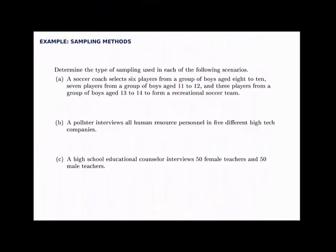In this example, we'll decide which type of sampling is being used in each description. In the first situation, a soccer coach selects six players from a group of boys aged 8 to 10, then seven players from the group aged 11 to 12, and finally three players from the group aged 13 to 14 to form a rec team. The key here is that the coach divided the group into segments based on their ages — a segment from 8 to 10, 11 to 12, and 13 to 14 — and from each segment selected several players. The fact that we're choosing a few from each group makes it stratified sampling.